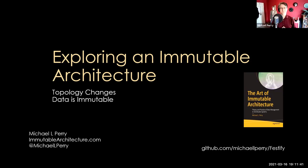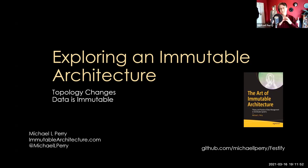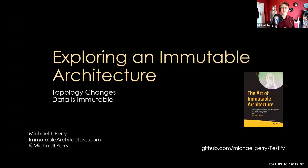I wanted to come talk with all of you about immutability and why I find immutability to be such an important feature of an architecture — so important that I put down all my thoughts in this book, The Art of Immutable Architecture. You can find out more about it at immutablearchitecture.com. If you want to follow along today with the source code, you can find that on GitHub at github slash Michael L. Perry slash Festify.